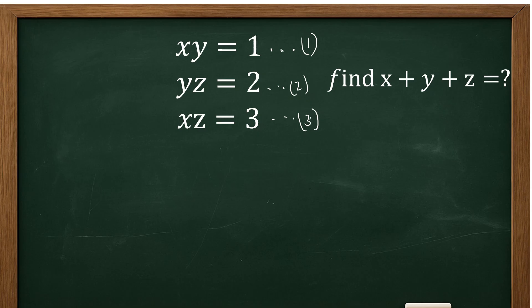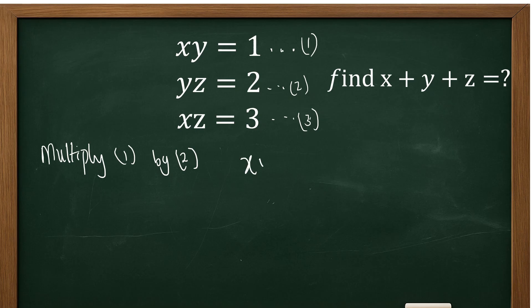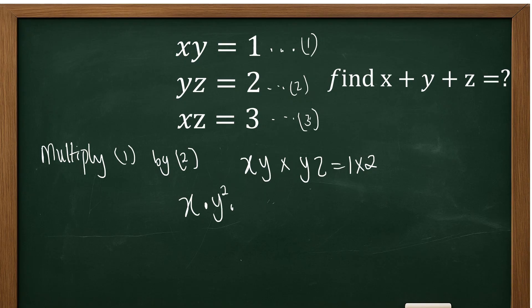Now I'm going to do something interesting. We want to multiply equation 1 by equation 2. So by doing that, we have xy multiplied by yz, which equals 1 times 2. This can be written as x times y squared times z equals 2. Let me call this equation 4.